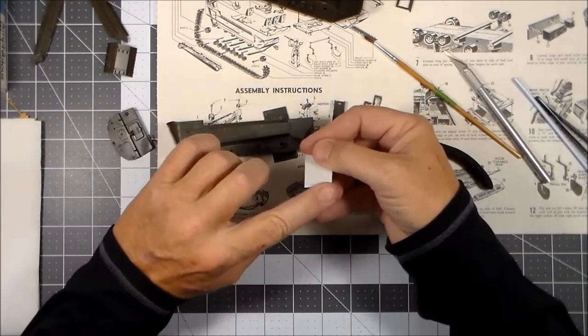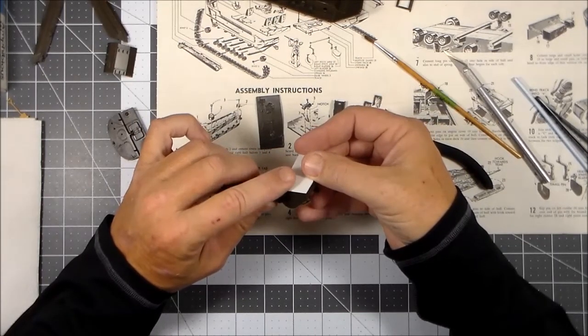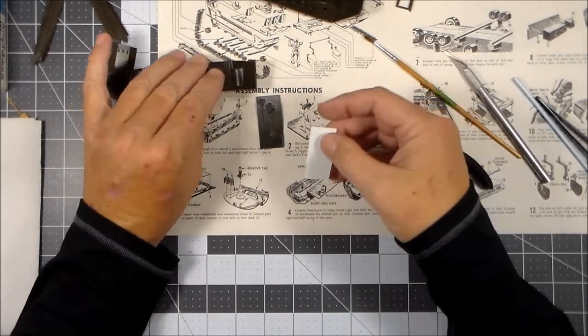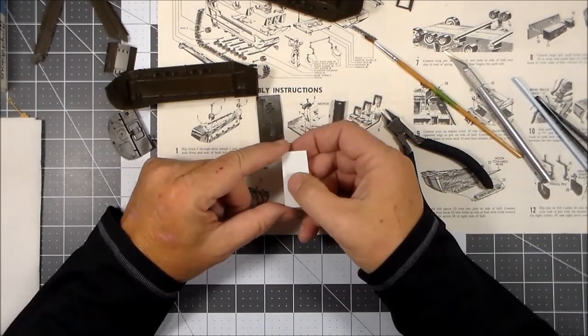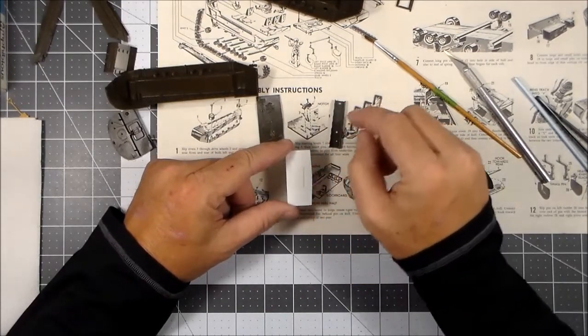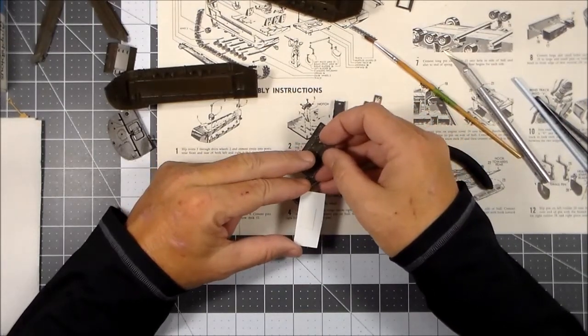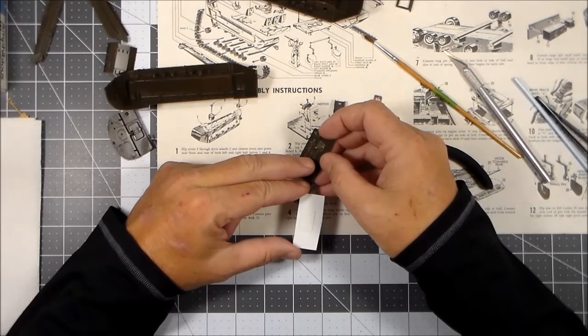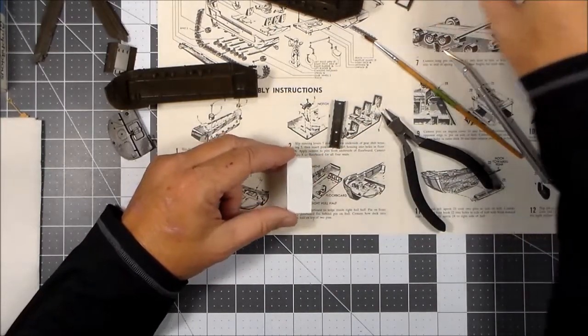And then once I get it in place I will sand the edges flush, get it all nice and smooth and it'll look nice. Then I've got my hatch cut, I'll glue that in place. Then I'll add some rivet detail and some of the other detail that was on there. The deck, this round, I'm assuming that's a fuel filler, so I will scratch build something for that.